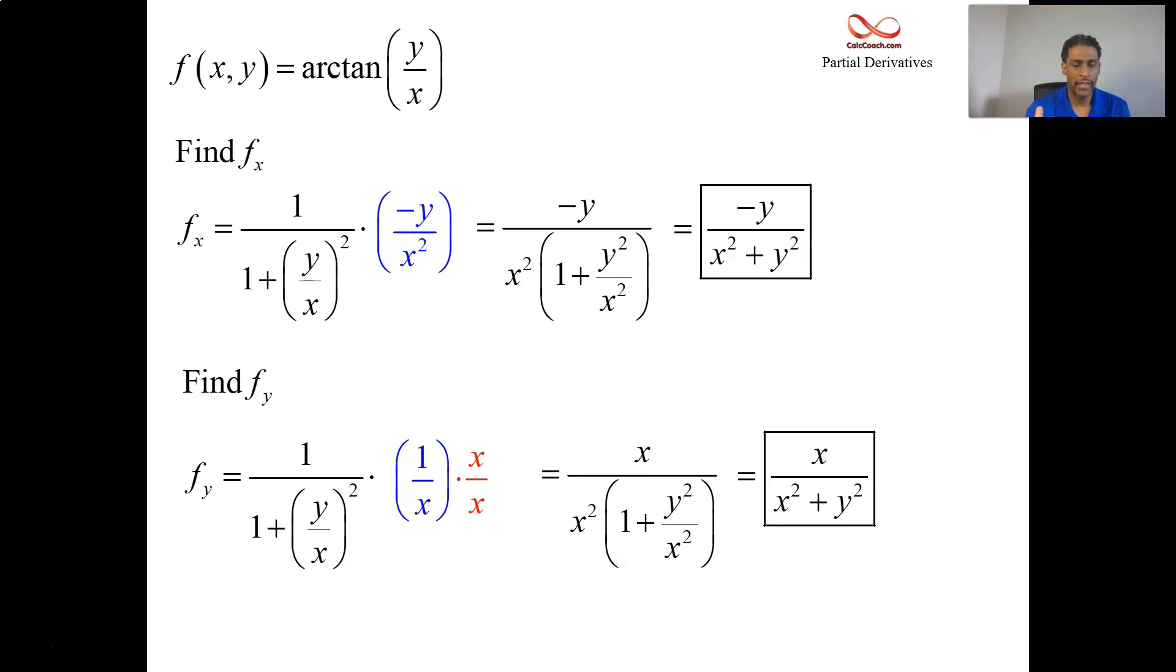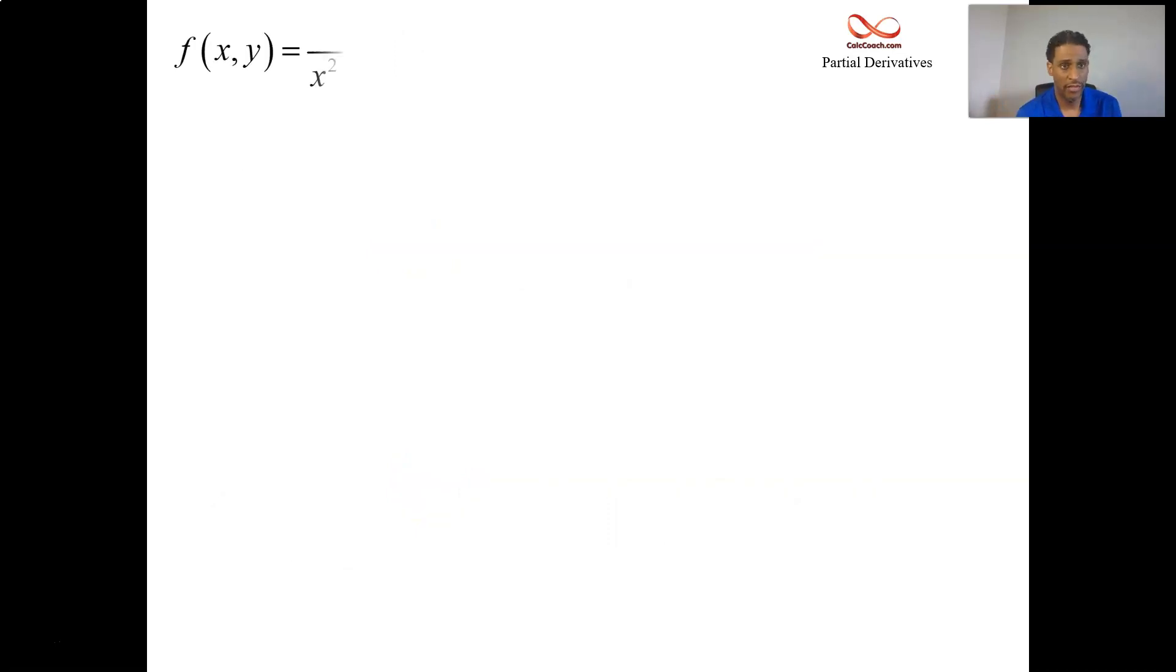Let's actually take this y partial here, x over x² + y², and let's take that as our function. Let's take its x partial and let's take its y partial.